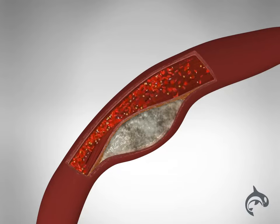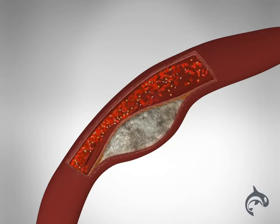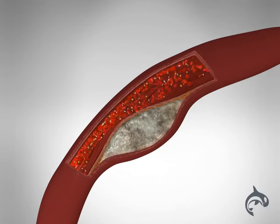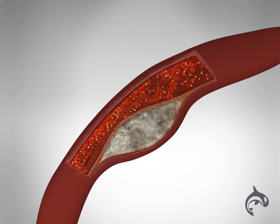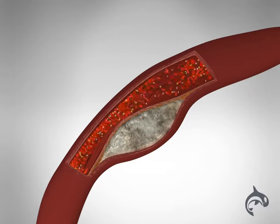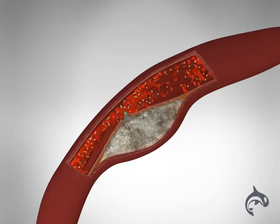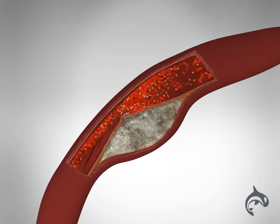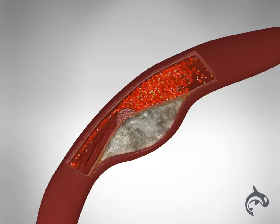Sometimes inflammation inside the plaque weakens the fibrous cap. Suddenly, the cap breaks. When that happens, the cholesterol inside spills out into the artery. A blood clot forms where the cap has ruptured. The clot plugs the artery and stops the blood flow.